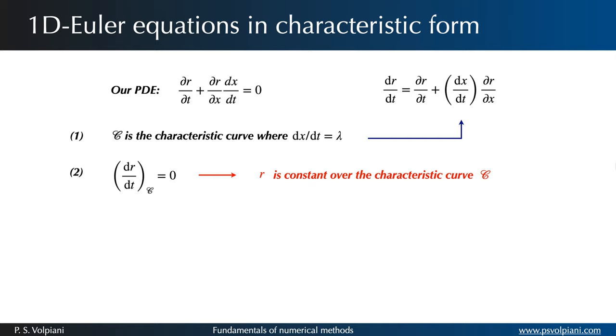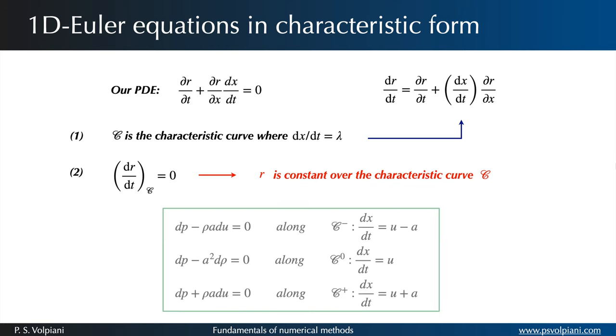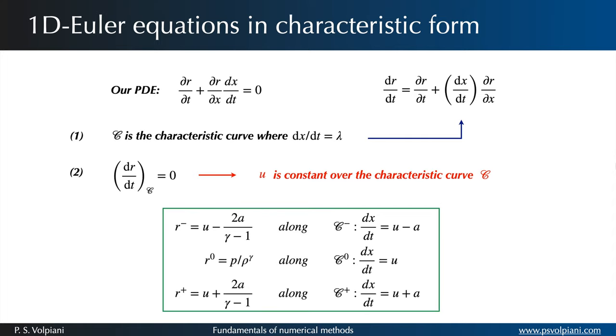The quasi-linear system that we just derived has three real eigenvalues and therefore it has three distinct characteristics. It can be shown that the invariants can be expressed as differential relations, which have to be integrated along the corresponding characteristic curves. In the case of an isentropic flow, we obtain the following expressions. These relations can be used to derive the exact solution of the shock tube problem that we want to solve numerically.